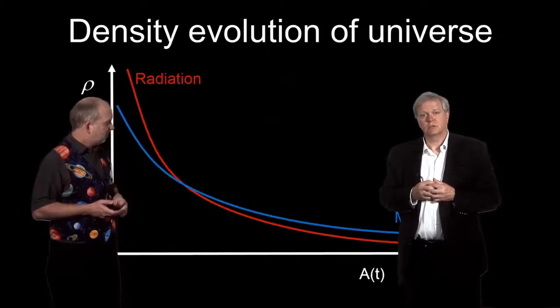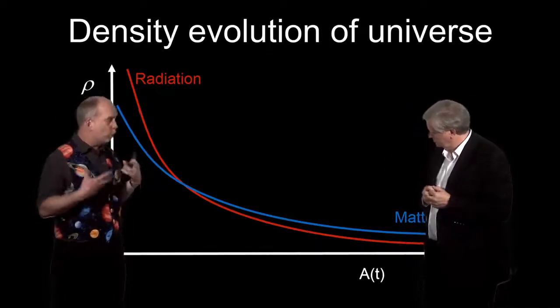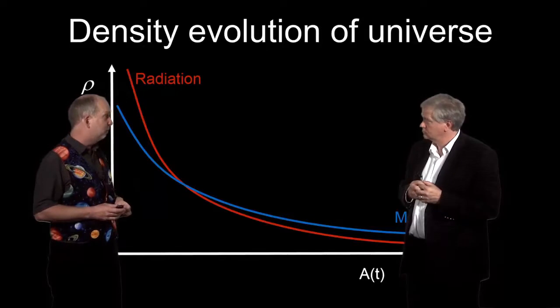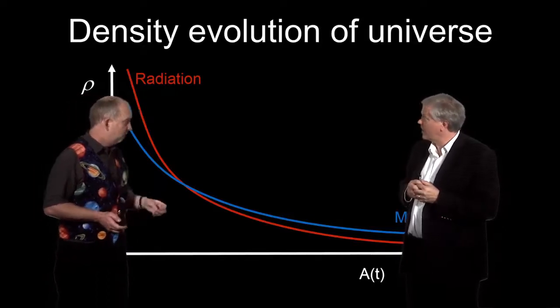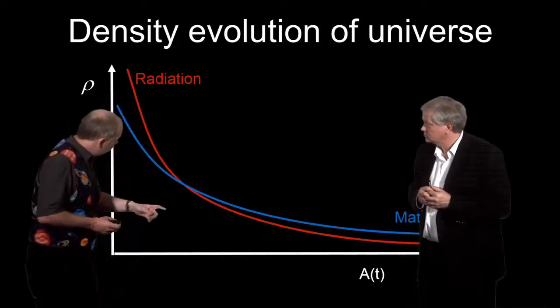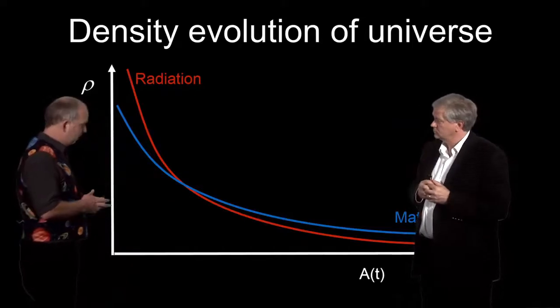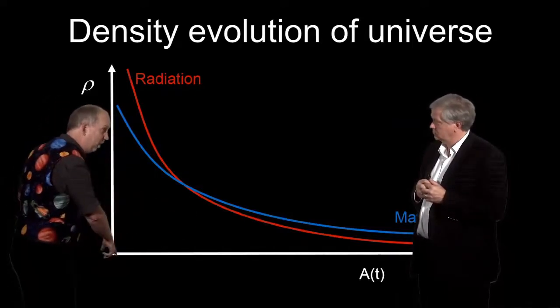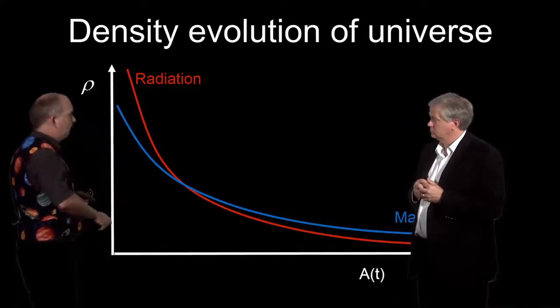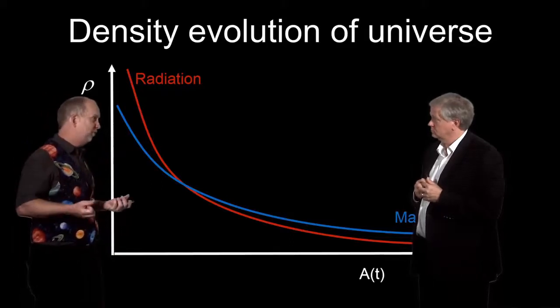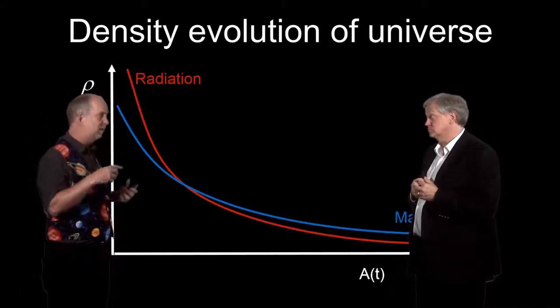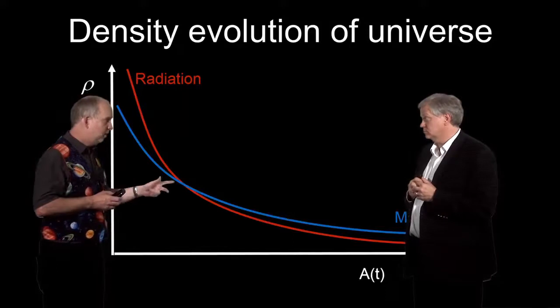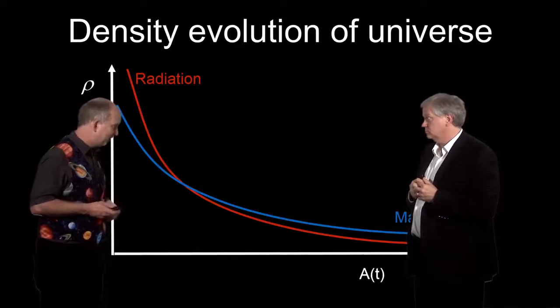Today, we know that the density of mass and non-relativistic particles is actually considerably more than that of radiation. It's about 5,000 times more. But as you go further and further back in time, A(t) gets smaller. Because the radiation density is going as 1 over A⁴, whereas matter is only 1 over A³, sooner or later, radiation is going to dominate.